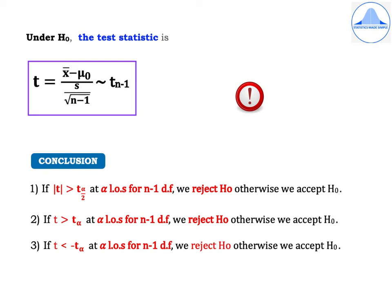Then similarly if we are testing a null hypothesis against an alternative which is left tail, you have to check if t is less than minus t alpha at alpha level of significance for n minus 1 degrees of freedom. Then we reject H0, otherwise we accept H0. Minus t alpha value can be found from the statistical table for t-test under lower tailed value.